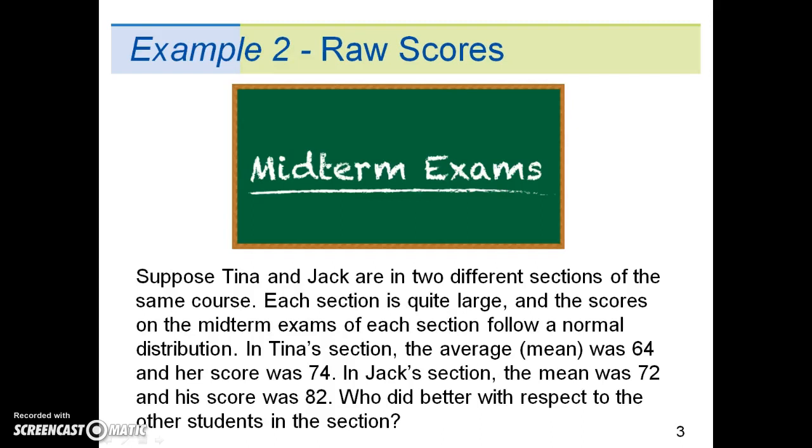Example 2 conceptually explains the need for standardized z-scores. Suppose Tina and Jack are in two different sections of the same course. Each section is quite large and the scores on the midterm exams of each section follow a normal distribution. In Tina's section, the average or mean was 64 and her score was 74. In Jack's section, the mean was 72 and his score was 82. Who did better with respect to the other students in their section?